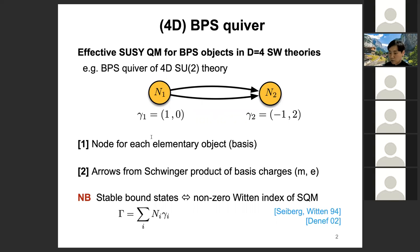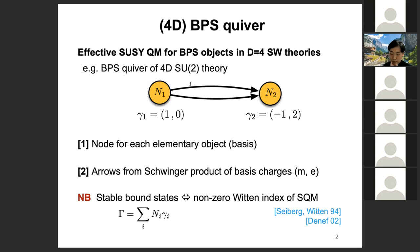We can draw a BPS Creeper based on two rules. First, a node of the Creeper means each elementary object in a theory — this plays a role of basis. Second, we can draw arrows between nodes following the rule that the number of arrows is given by the Schubinger products between basis objects. For instance, the left first node means a monopole in 4G-SE2 Seiberg-Witten theory, with charge (1,0). We can assign the second node charge (-1, 2), representing a dyon. The Schubinger product between these two is 2, and the number of arrows drawn is 2.